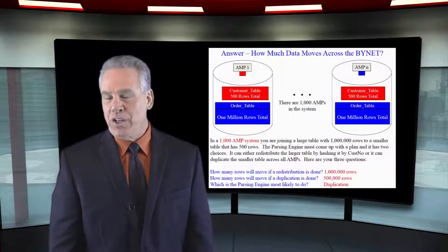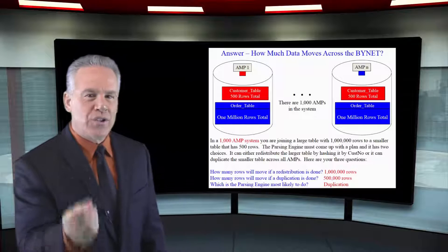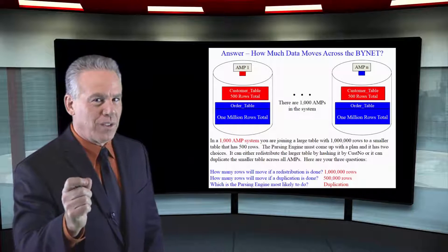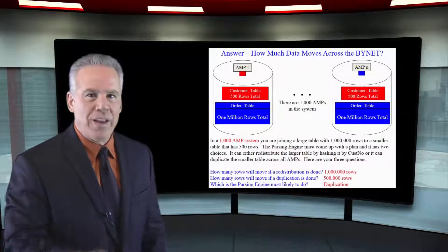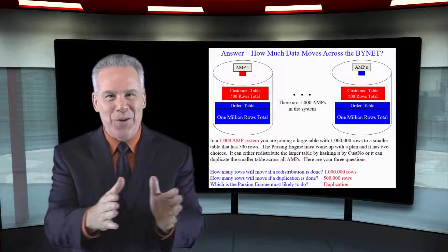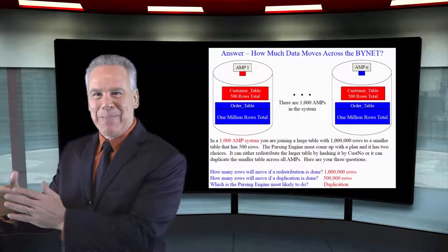If the parsing engine decided, I'll redistribute the million rows by customer number, then 1 million rows would be moving across that BYNET.